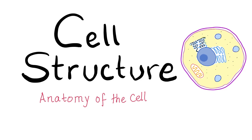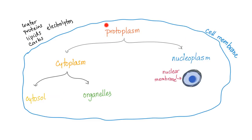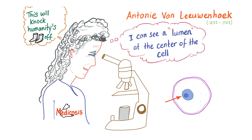In my previous video, I told you that protoplasm is cytoplasm plus nucleoplasm, and cytoplasm is cytosol plus organelles. Protoplasm is made of water, electrolytes, proteins, lipids, and carbohydrates.